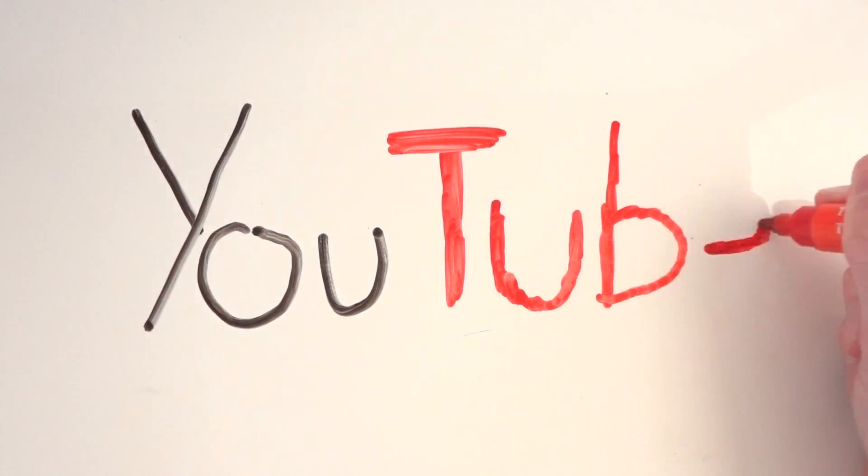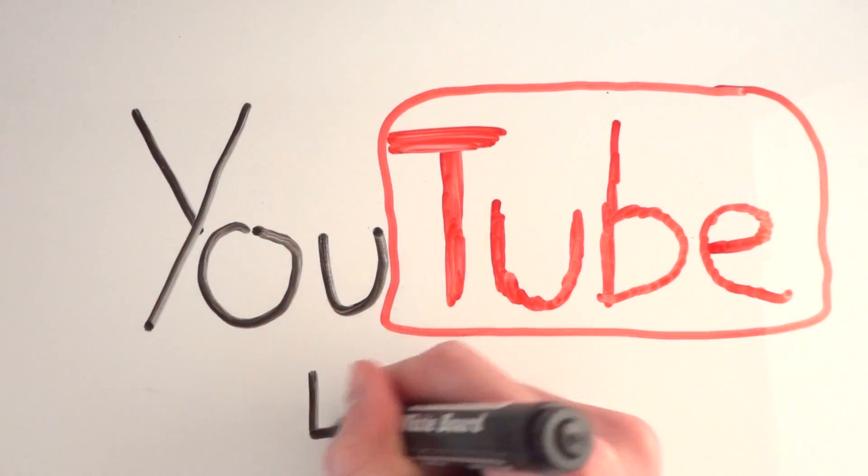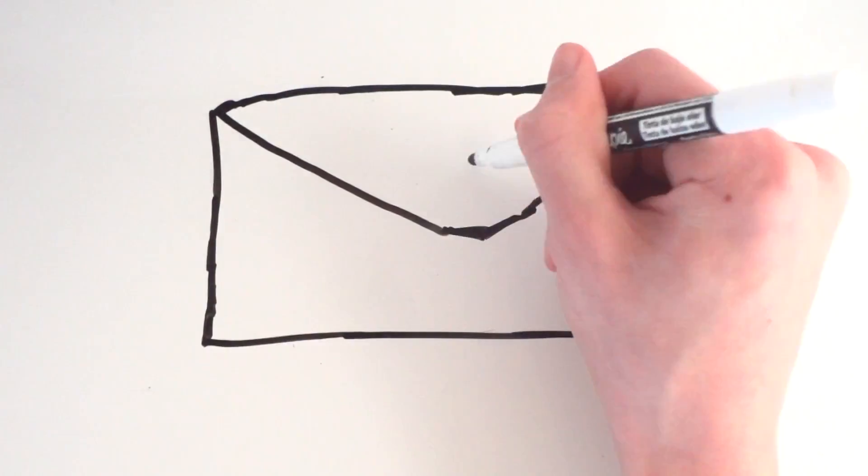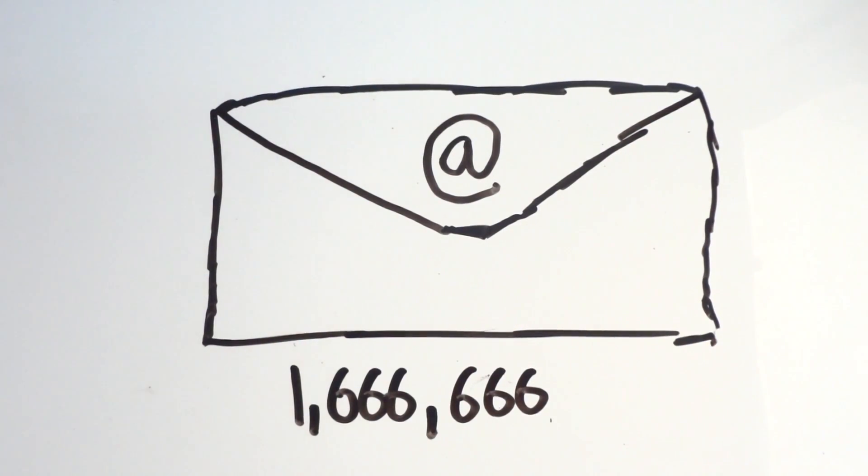Depending on how you look at it, a second is very quick. For example, every second 46,333 YouTube videos are watched, and every second 1,600,000,666,666 emails are sent. A lot can happen in a second.